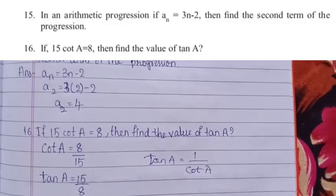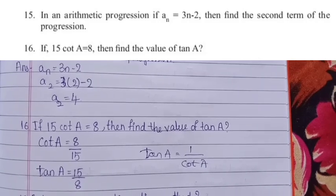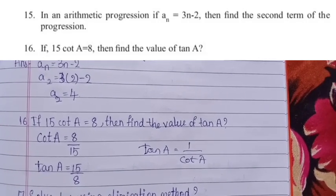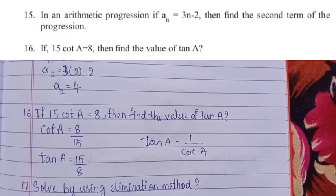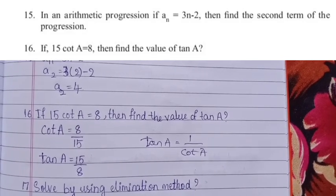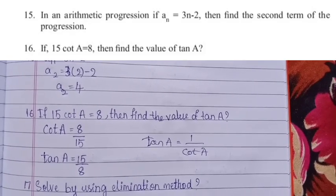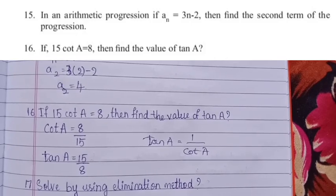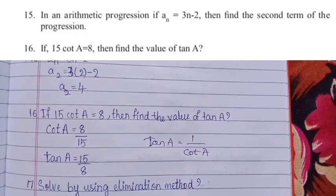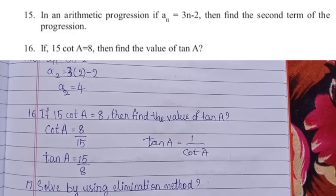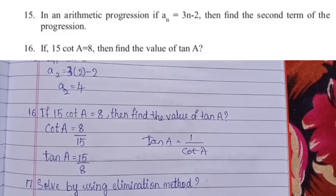In an arithmetic progression, if aₙ = 3n − 2, then find the second term. For the second term, n = 2: a₂ = 3(2) − 2 = 6 − 2 = 4. Therefore a₂ = 4.